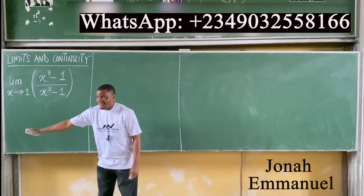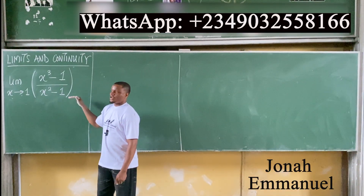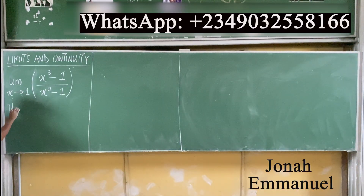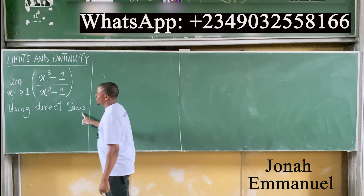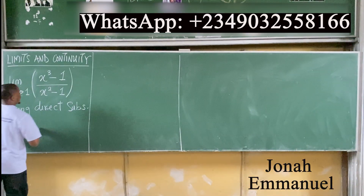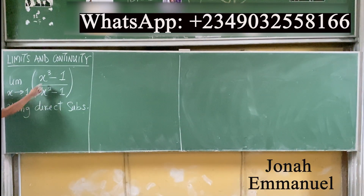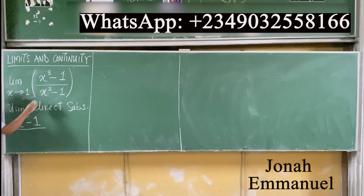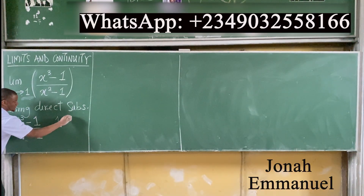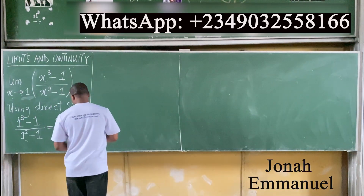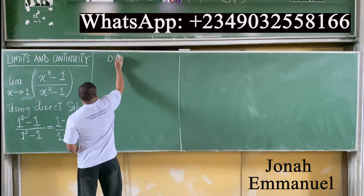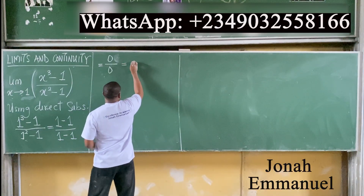The first task is using direct substitution. Put x equal to one. That gives you one cubed minus one all over one squared minus one, which equals zero all over zero — that's undefined.